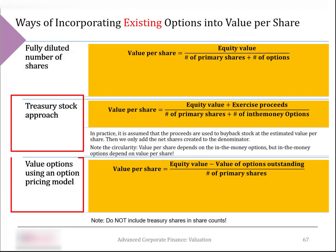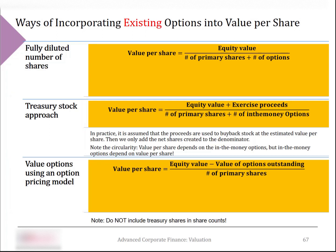To sum up, both the Treasury Stock Approach and the option pricing approach are reasonable ways to incorporate the effect of employee and management options in valuation. However, in situations where the time value of options represents a significant part of option value — for example, when there are many out-of-the-money or at-the-money options, when the time to expiration is very long, or when the stock price is very volatile — the Treasury Stock Approach may attach too low a value to the options and hence overestimate the value per share.